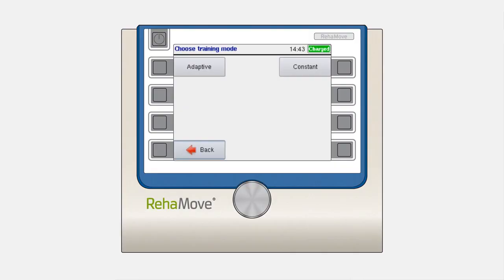When you have chosen either adaptive or constant mode, you will be automatically forwarded to the channel configuration. Here you can choose between three options, namely unilateral, bilateral, or individual.